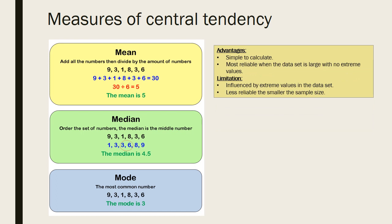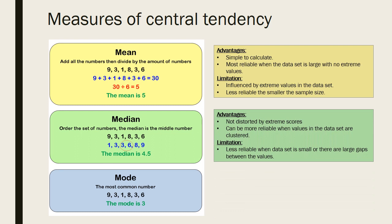For example, while the mean is generally the preferred and simplest measure of central tendency, it is less reliable with smaller sample sizes and is influenced by extreme values or outliers in the data set. Therefore, when outliers are present, the median is the more appropriate measure of central tendency to use.